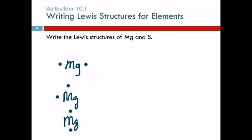How about sulfur? How many valence electrons does sulfur have? Six. So we need six dots: one, two, three, four, five, six.